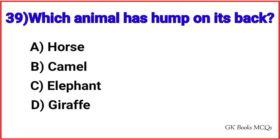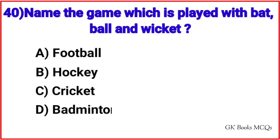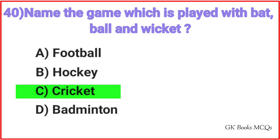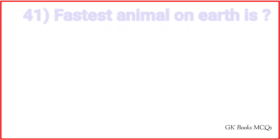Question 39: Which animal has a hump on its back? Correct answer is option B, Camel. Question 40: Name the game which is played with bat, ball and wicket? Correct answer is option C, Cricket. Question 41: Fastest animal on earth is? Correct answer is option A, Cheetah.